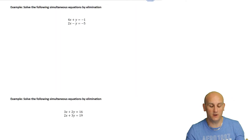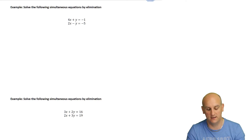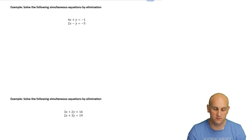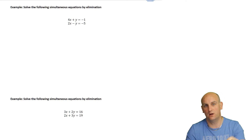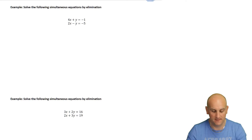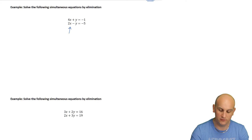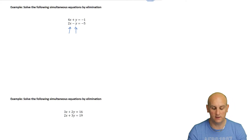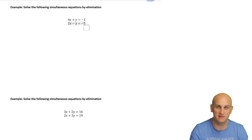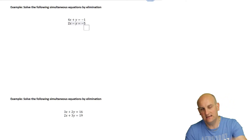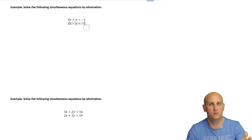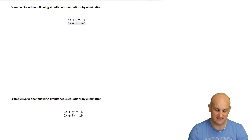Next one: solve the following simultaneous equations by elimination. When we eliminate, we look for a coefficient of x or a coefficient of y that are the same. The coefficients of x are 4 and 2 - not the same. The coefficients of y are both 1, one positive and one negative - I need them to match.